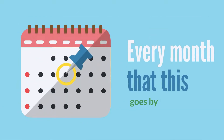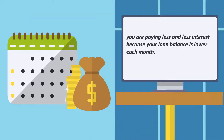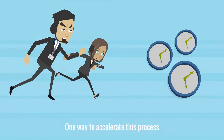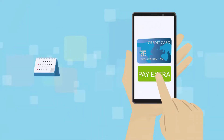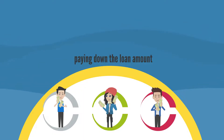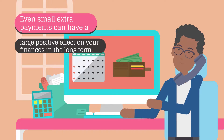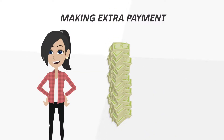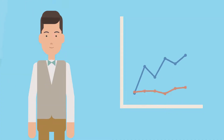Every month that goes by, you are paying less and less interest because your loan balance is lower and lower each month. One way to accelerate this process is to pay extra towards your bond each month, because all extra payments become 100% principal, meaning they go straight to paying down the loan amount. So even small extra payments can have a large positive effect on your finances in the long run. Making these extra payments saves you money because it reduces your interest expense, which is especially important now in a rising rate environment.